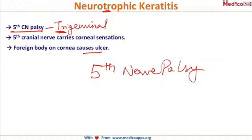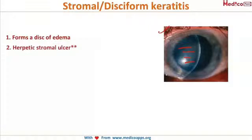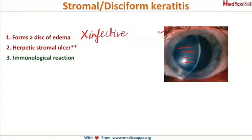Now looking at stromal keratitis caused by the herpes virus — in this picture, the stroma is very hazy all over, forming a disc of edema. This is herpetic stromal or disciform keratitis. Importantly, this is not an infective condition; it is an immunological reaction of the body — an immune response towards the infection causing a disc of edema in the stroma.